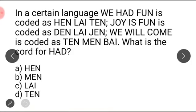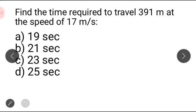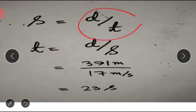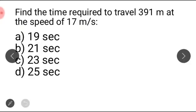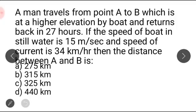Next question: find the time required to travel 391 meters at the speed of 17 meters per second. Since both distance and speed are in consistent units, we use speed equals distance divided by time. Time equals 391 divided by 17, which equals 23 seconds. The right answer is 23 seconds.